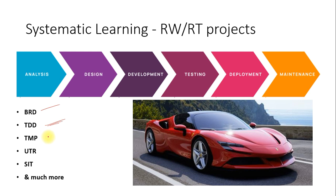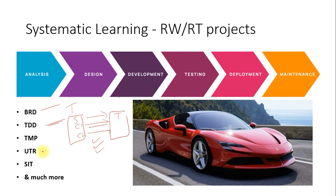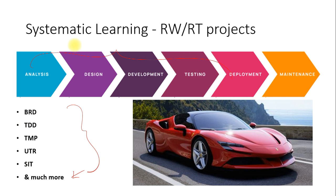We convert business requirements from plain English into developer-friendly technical documentation — that's the TDD. We'll be covering BRD, TDD, and technical design mappings. Mapping defines the source and target table names and column names, and also specifies the transformations. We also produce unit test results to confirm the build is working. After individual testing, a QA team performs SIT — they evaluate whether it's good enough to hand over to business. This is just using the car as an example, but there are many steps and phases in a real project.